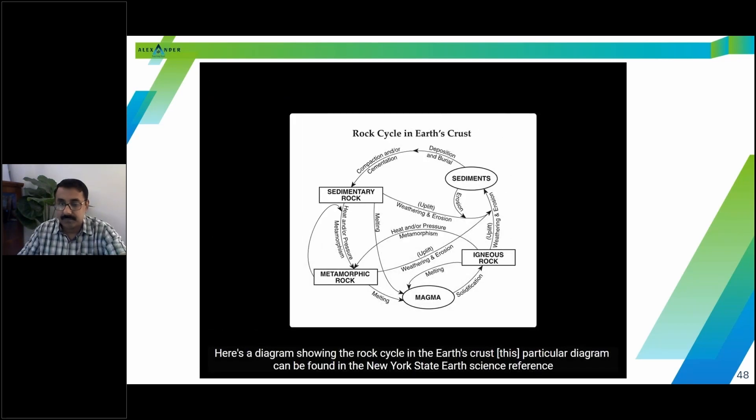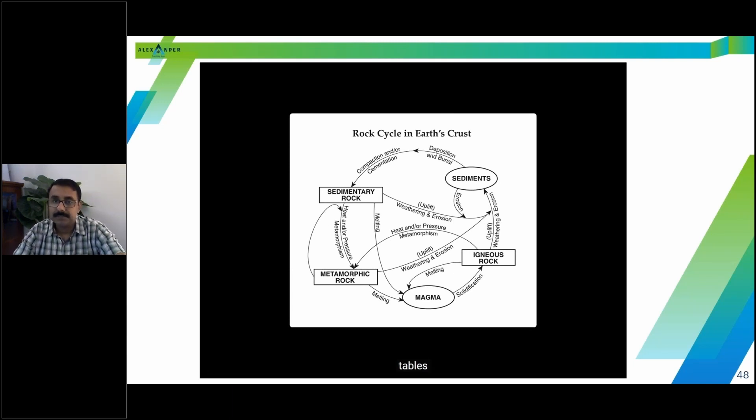Here's a diagram showing the rock cycle in the Earth's crust. This particular diagram can be found in the New York State Earth Science Reference Tables. What it shows are the different types of rocks and how they can change over time.